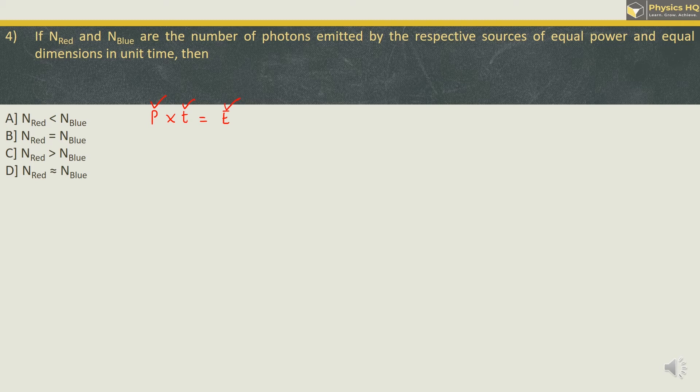For both the sources, amount of power and time taken is same. Therefore energy will be same for both the sources. So we can write energy for the red source will be equal to energy for the blue source. Now energy of a single photon emitted by the red source is given by h nu of red source. This is the energy of single photon. To find the total energy in that particular time, we will multiply it by n_r which is the number of photons of red source emitted. This will be equal to similarly number of blue photons which are emitted, and the energy of every photon will be given by this formula.